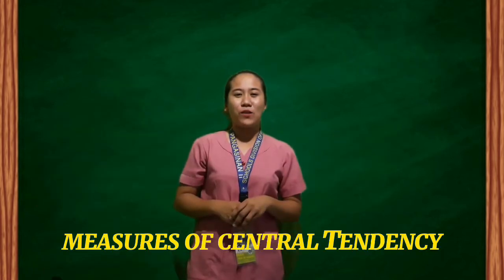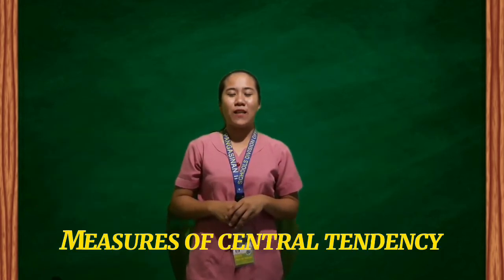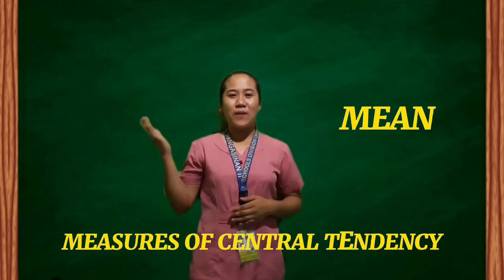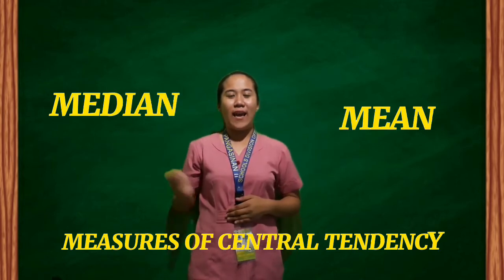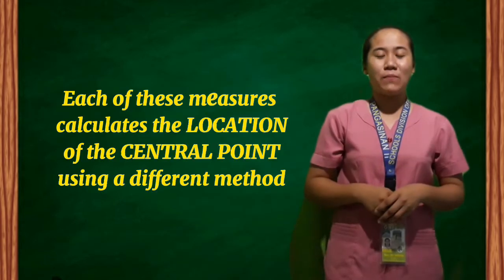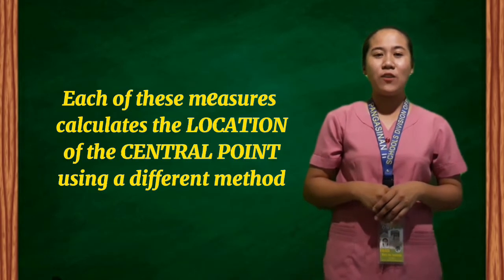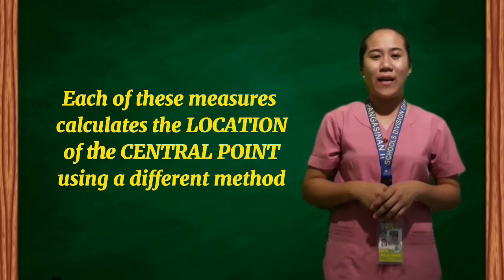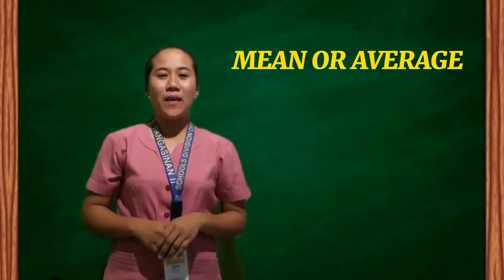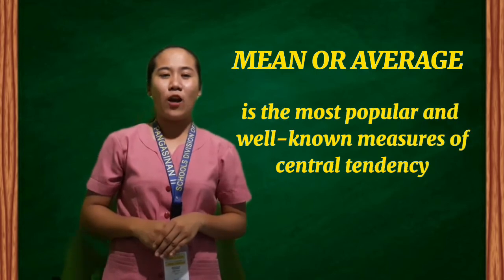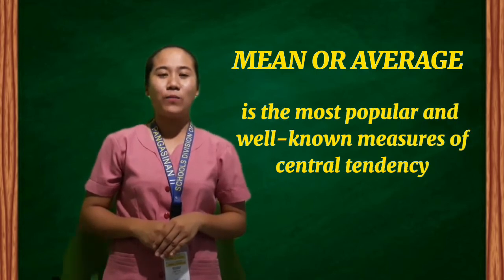The three most common measures of Central Tendency are mean, median, and mode. Each of these measures calculates the location of the central point using different methods. Mean or average is the most popular and well-known measure of Central Tendency.